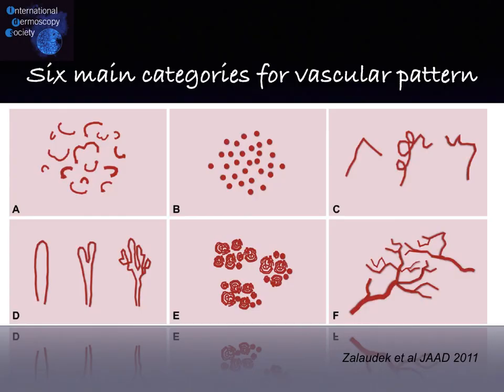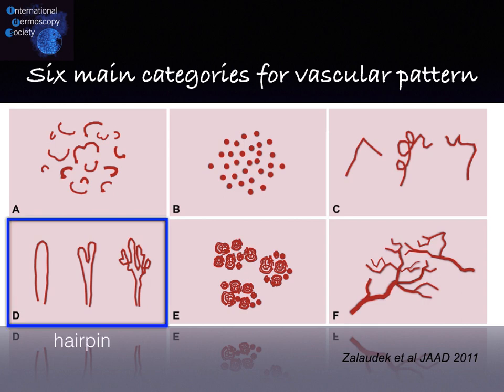When we talk about vascular pattern in general, we know that we can have six different categories: comma, dotted, arborizing, glomerular, linear irregular, and hairpin vessels, as you can see in the D panel. This has been nicely summarized in a review published by Iris Zelaudec in 2011 in the Blue Journal.